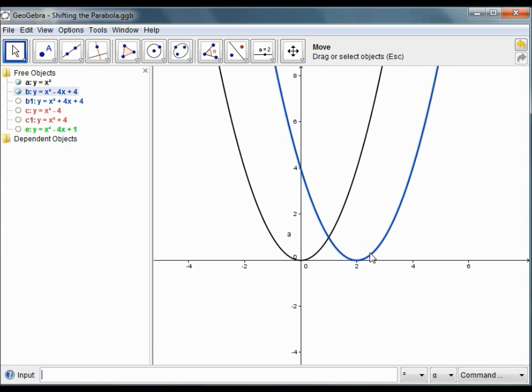And we've got the blue parabola of the equation (x minus 2) squared, which is moved to the right by 2 units.